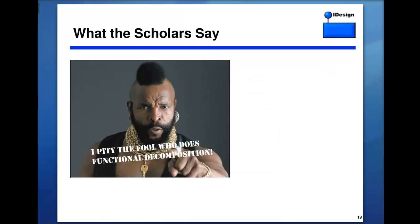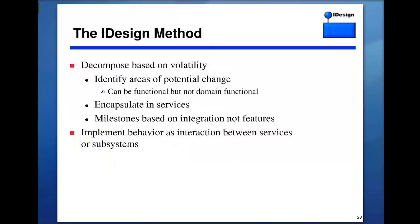If you design against requirements in a naive functional way, as requirements change your design changes, because you designed against the requirements. The more requirements change, the more pain you inflict on your side. What the scholars say: the fool who does functional decomposition is the wrong thing to do. The right thing — a small part of the iDesign method — is to decompose based on volatility: identify areas of the system that could potentially change, encapsulate those in building blocks, and implement the required behavior by integrating those services.